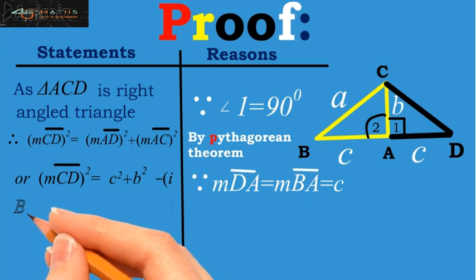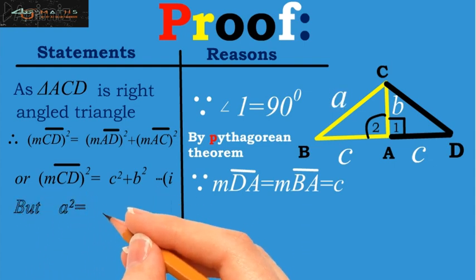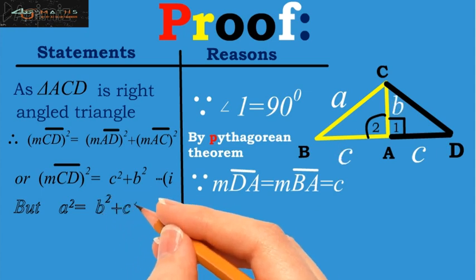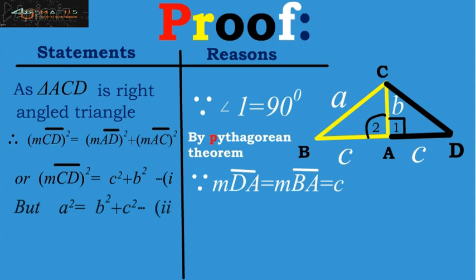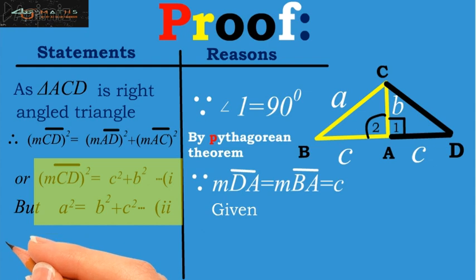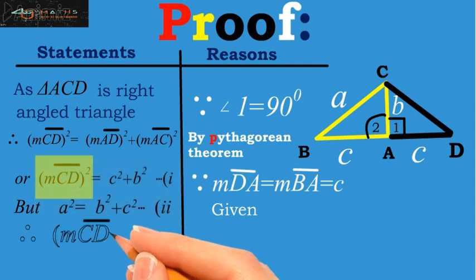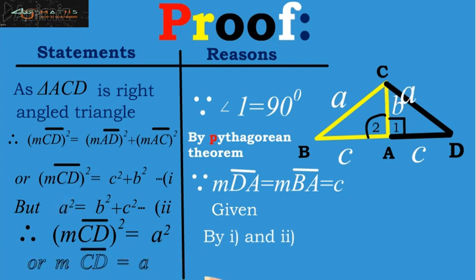But we have given that A square is equal to B square plus C square. Say this is our second equation. Now comparing these two equations we have measurement of CD square is equal to A square. Here, taking square root we have measurement of CD is equal to A.